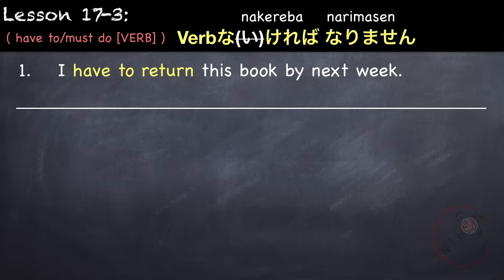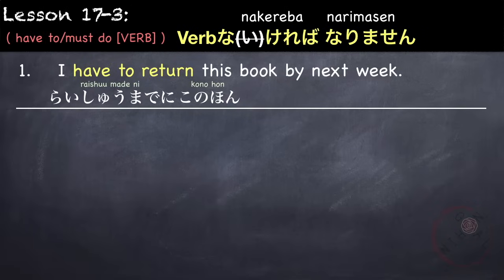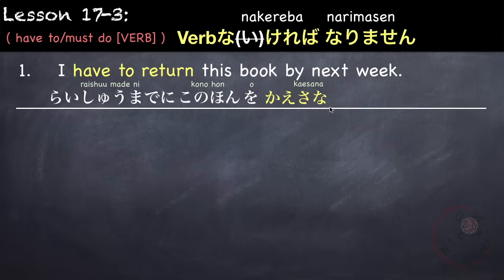For example, 'I have to return this book by next week.' Raishu made ni konohon wo kaesanakereba narimasen. Our verb is return — kaeshimasu — so we change it to nai form kaesanai, remove i, and attach kereba narimasen: kaesanakereba narimasen.